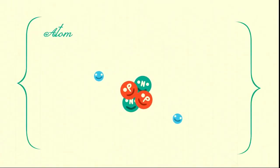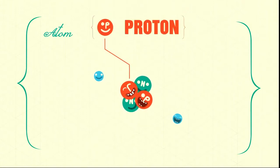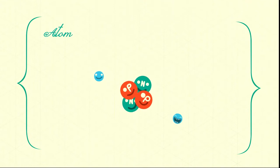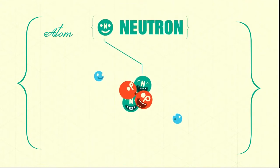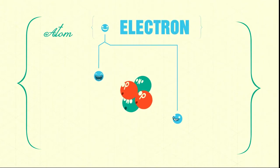Every atom has a core which is made up of at least one positively charged particle called a proton, and in most cases, some number of neutral particles called neutrons. That core is surrounded by negatively charged particles called electrons.